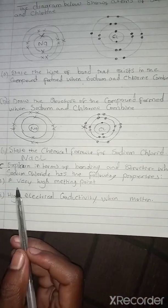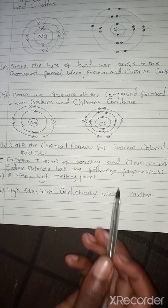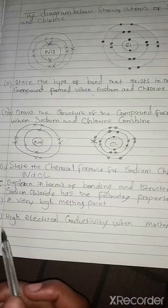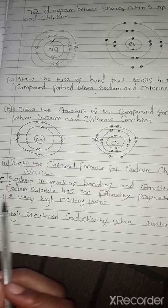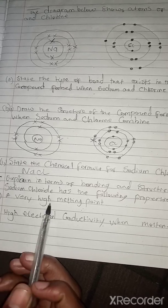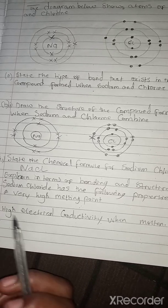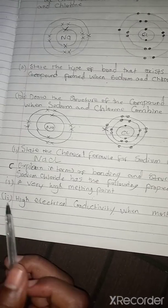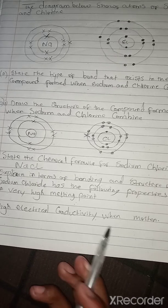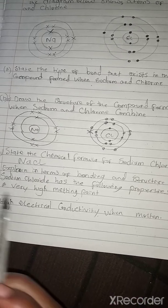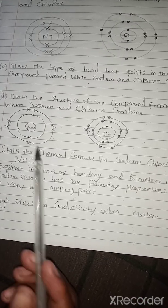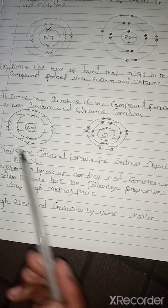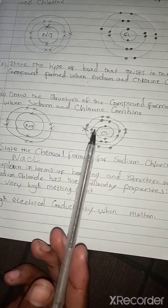Part C asks us to explain in terms of bonding and structure why sodium chloride has certain properties. C1: sodium chloride has a very high melting point because of the strong intermolecular forces between the ions. C2: it has high electrical conductivity when in solution or molten, because of the charges — the positive charge on sodium and the negative charge on chlorine — which allow the ions to move and conduct electricity.